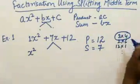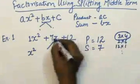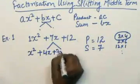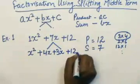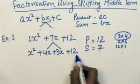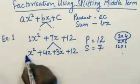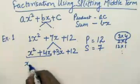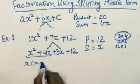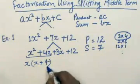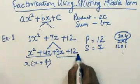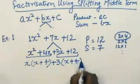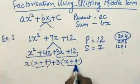The suitable split is 3 and 4 because their sum is 7. So let's split 7x as 4x + 3x + 12. Now, instead of three terms we have four terms. From the first two terms, x is common, leaving x + 4. From the next two terms, 3 is common, and you should be left with the same expression.